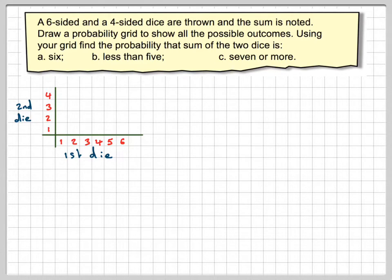And then we are interested in the sum, so that's the addition. One plus one is two. Two plus one is three. Three plus one is four. Four plus one is five. Five plus one is six. Six plus one is seven.